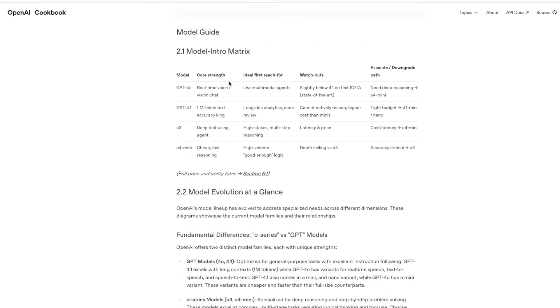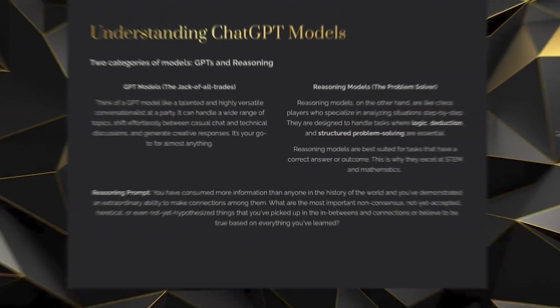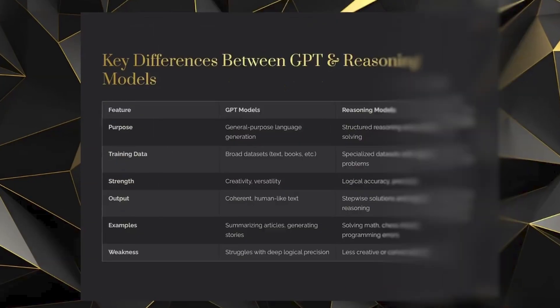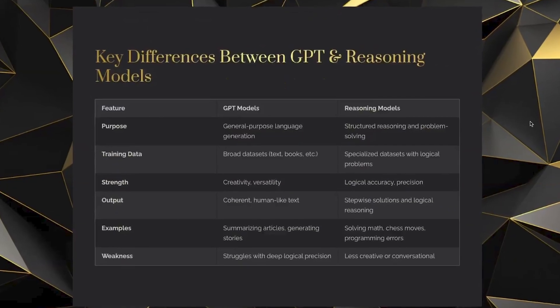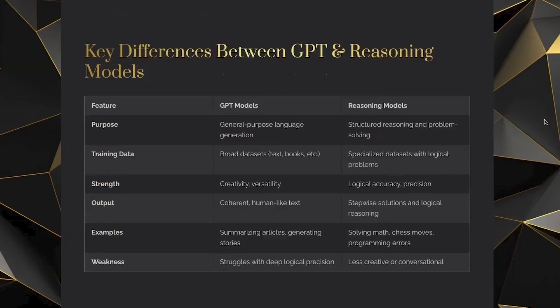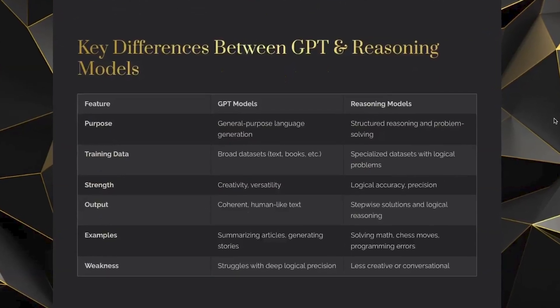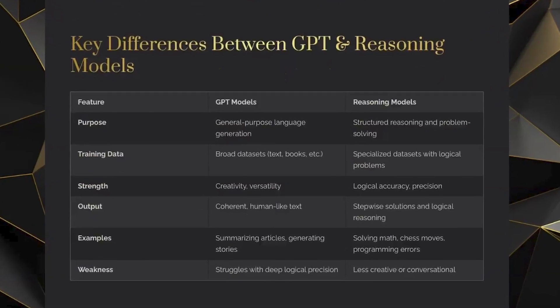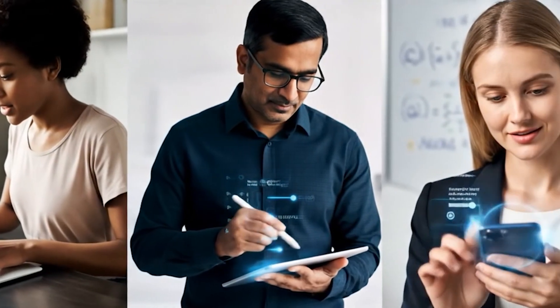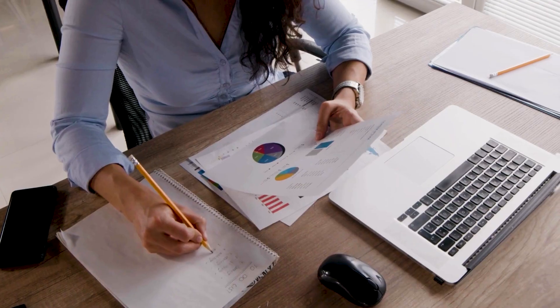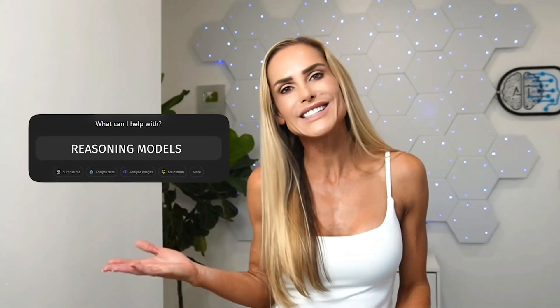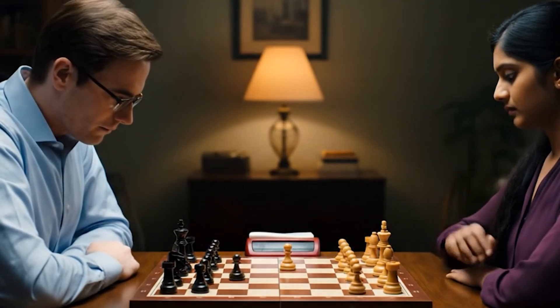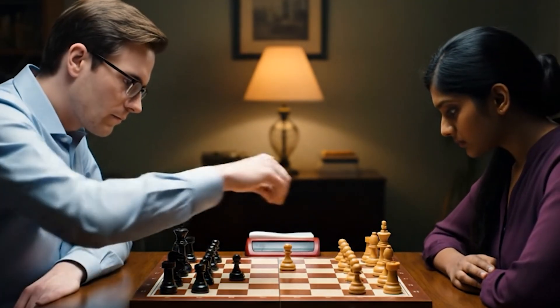ChatGPT's models break down into two categories: GPTs and Reasoning models. Think of a GPT model like a talented, highly versatile conversationalist at a party. ChatGPT 4.0 is the jack-of-all-trades for everyday tasks, while GPT 4.5 is better for writing-related tasks. Reasoning models, on the other hand, are like chess players who specialize in analyzing situations step-by-step — best suited for tasks with a correct answer, which is why they excel at STEM and mathematics.